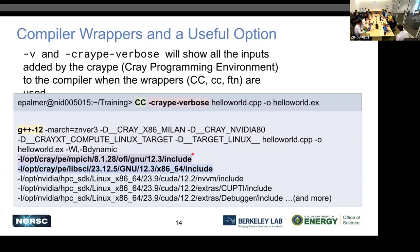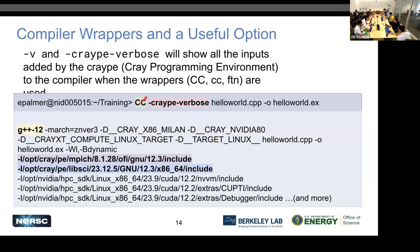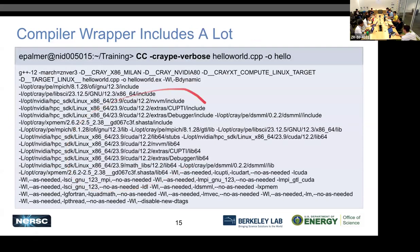Here's more about what those Cray compiler wrappers do behind the scenes. If I add the flag '--craype-verbose' to the compiler line, it tells me everything happening when I use the wrapper. The reason we call it a wrapper is because inside it calls G++. It also wraps in our MPI library MPIch — the one that works best on our system. It also includes CrayLibSci, our linear algebra math package with LAPACK and BLAS. All of that is included automatically when you use CC, so you don't need to specify those things manually.